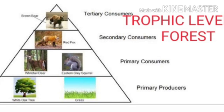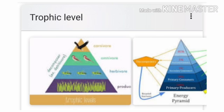For example, the first trophic level is of plants or producers; the second trophic level is of herbivores; the third trophic level is of carnivores; and the fourth trophic level comprises tertiary consumers or top carnivores. These are the various trophic levels existing in a food chain of our ecosystem.